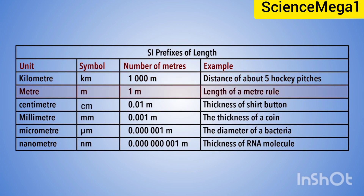Next we have meter, which has the symbol small m, and the number of meters is 1 meter — that is the length of a meter rule used in drawing items on the chalkboard. We also have centimeter, symbol cm, and the number of meters is 0.01 meter. An example is the thickness of a shirt button. We also have millimeter, symbol mm, and the number of meters is 0.001 meter — for example, the thickness of a coin.